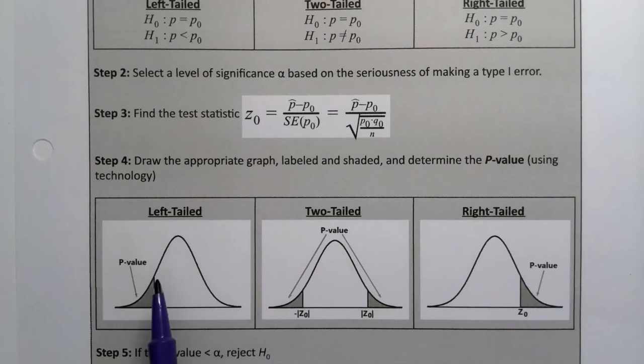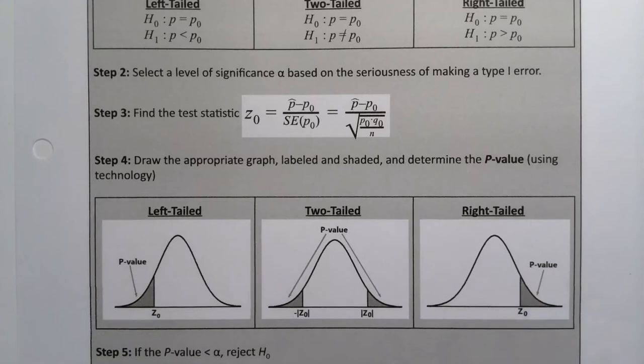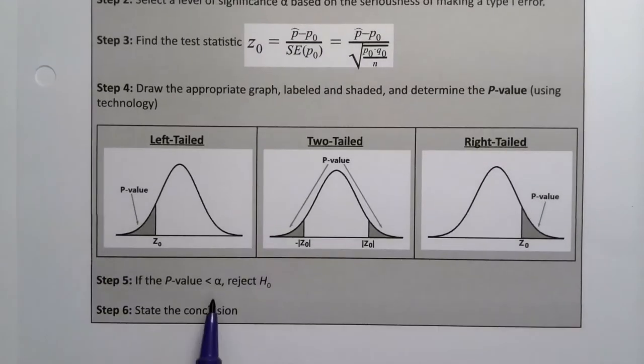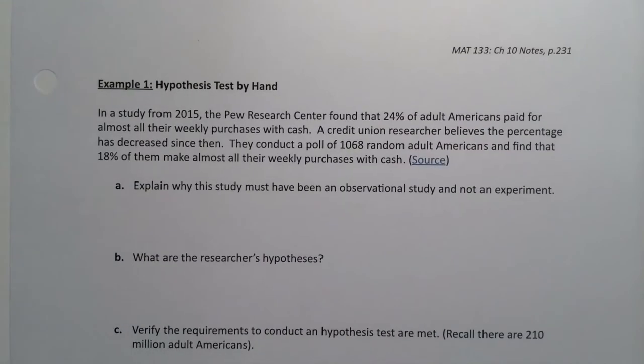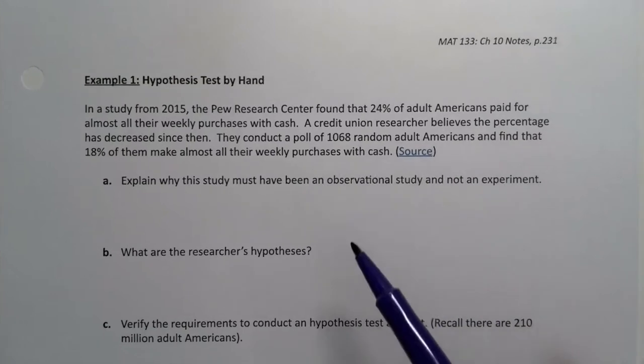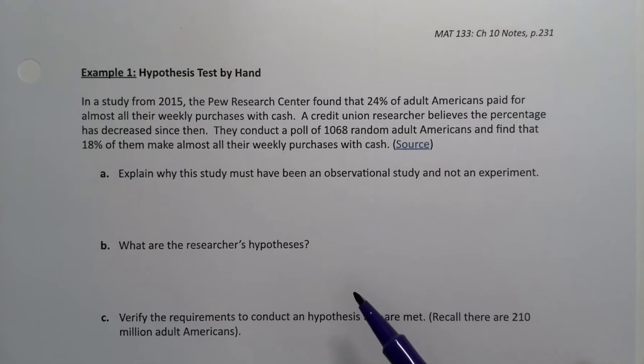Then step four will be to draw one of these pictures based on which type of hypothesis test we are running. So if it's left tailed test, we will draw this picture. See the left tail is shaded. Two tails, it shades both tails, and then the right tailed. And then if the P value is low, reject H0. And then we will write our conclusion as we learned how to in section 10.1. All right, so let's do this by hand. I've broken this one down a little bit into steps and pieces to help us kind of remind ourselves of some things that are affecting the results and what's happening.